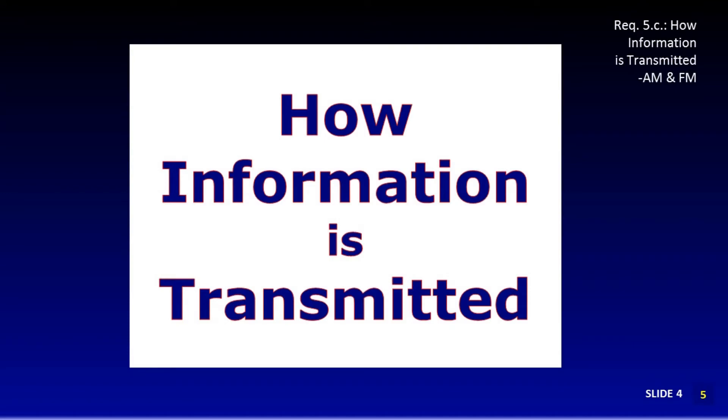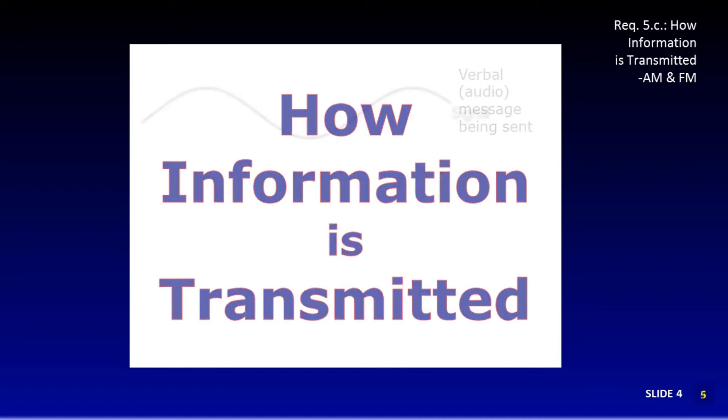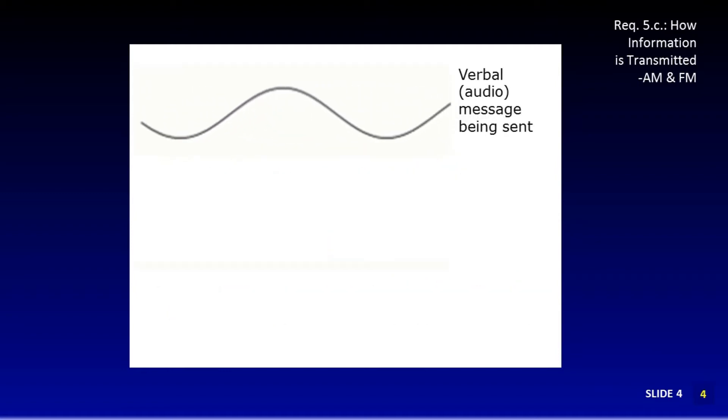Let's look at how information is transmitted. How radio waves carry information. When we talk, the variation of our vocal cords creates sound waves. That is how you can hear me right now. The waves on the screen represent an audio wave. It is what we want to transmit from our radio antenna.